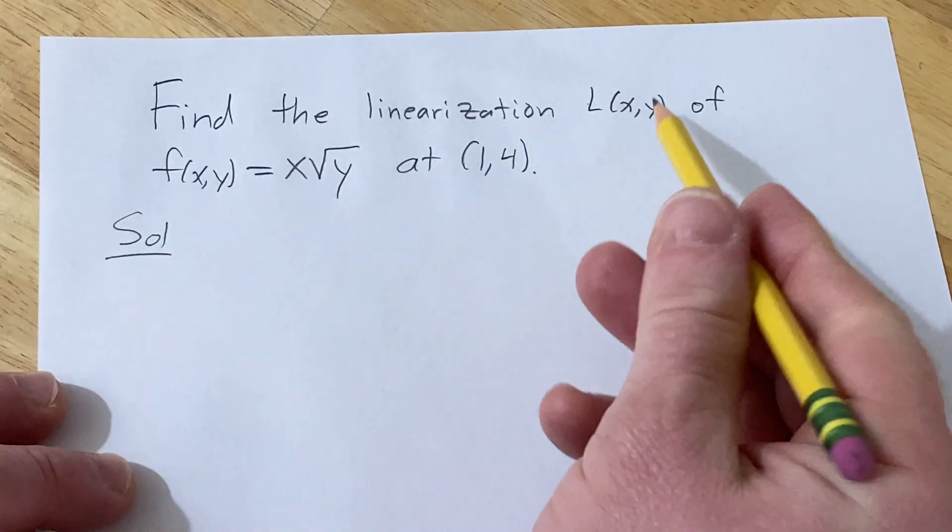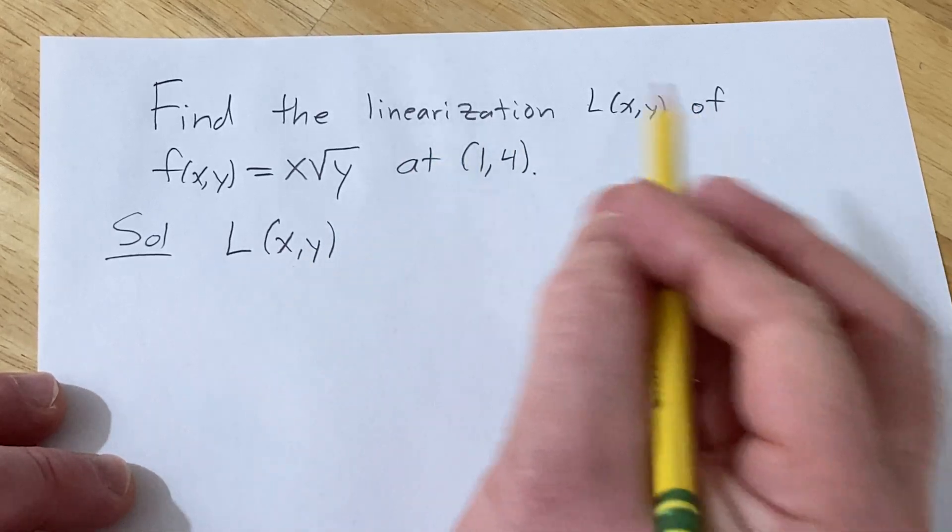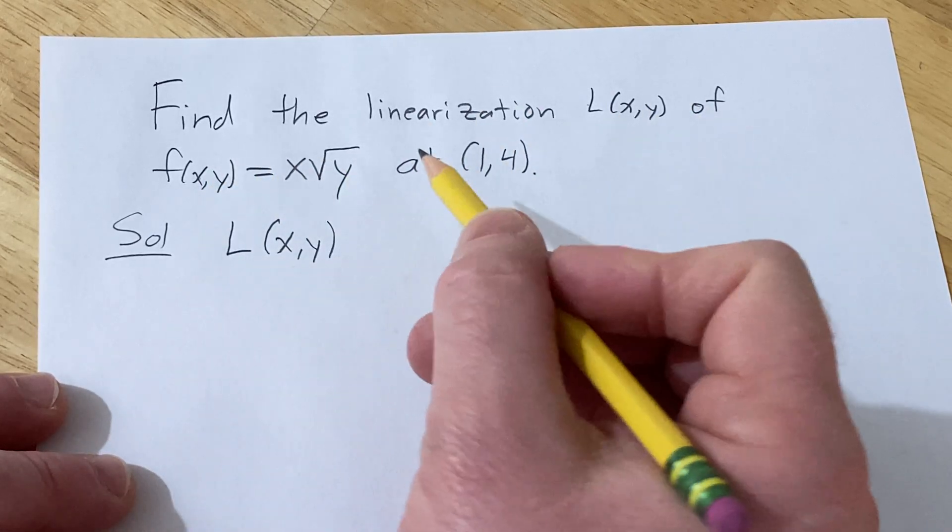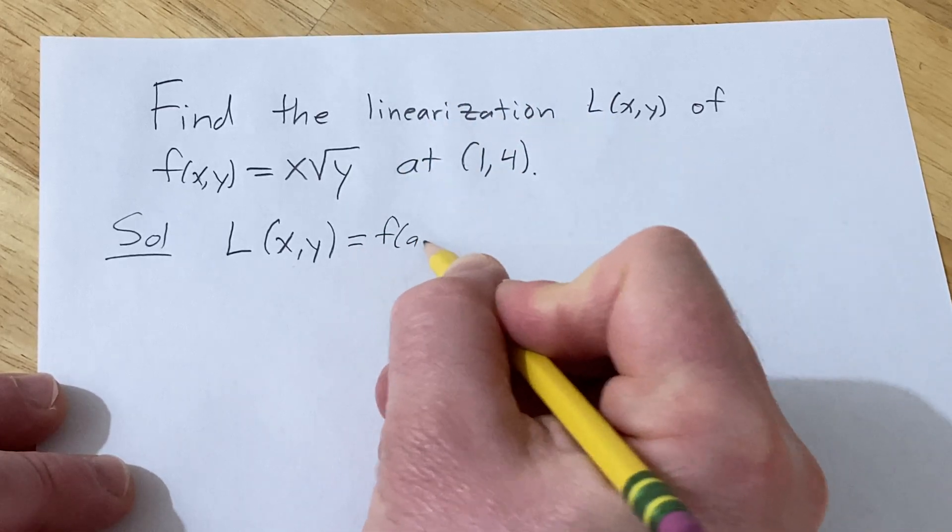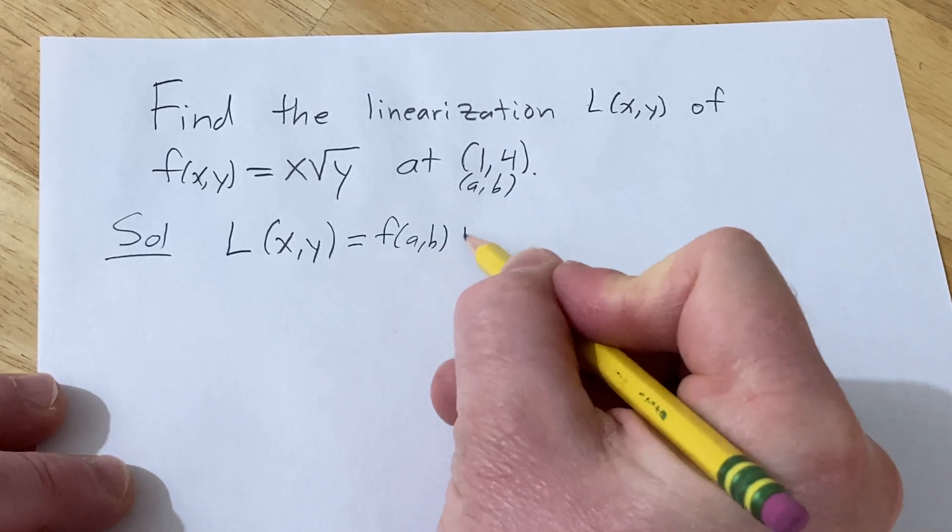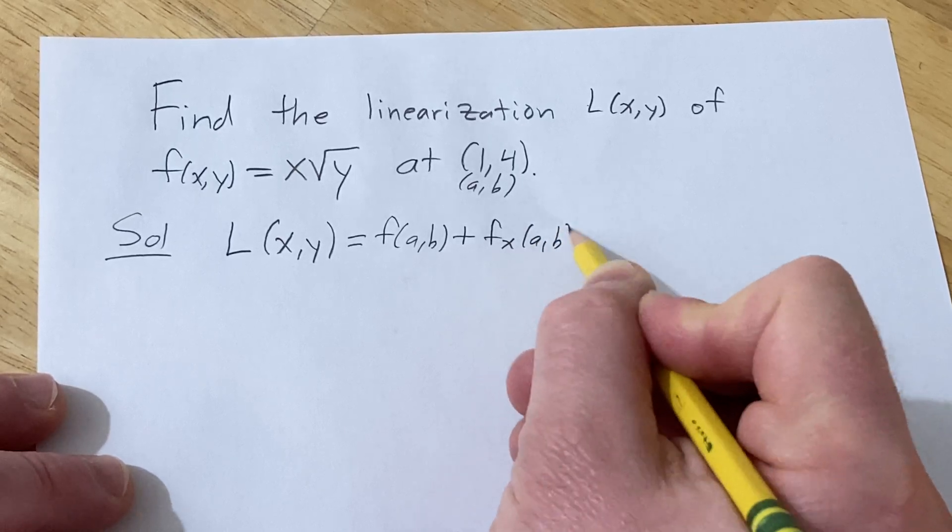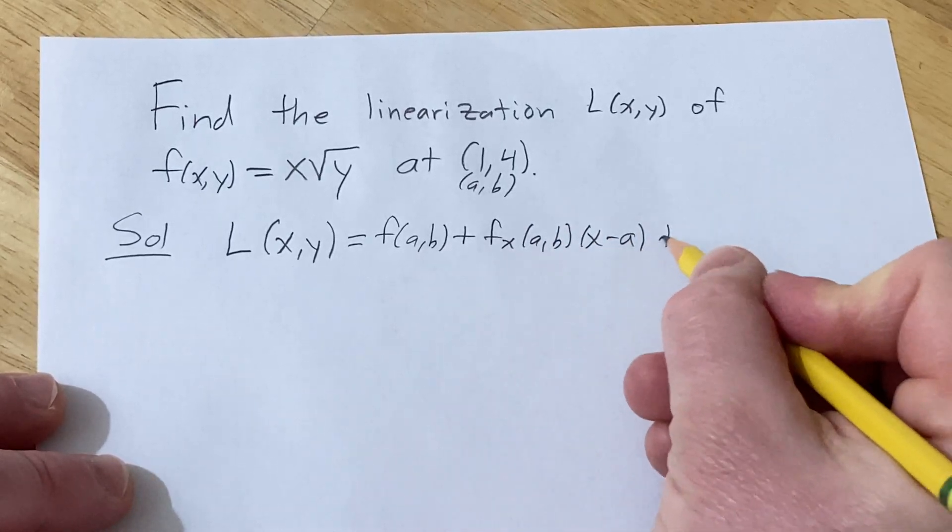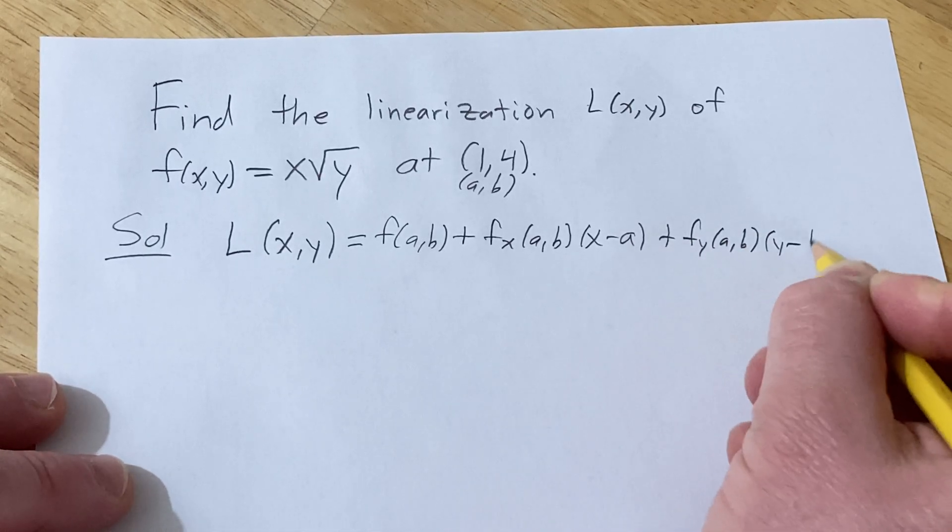So first I'm going to give you the formula. The linearization, or the tangent line approximation, same thing, of this function at a point is going to be f(a,b), where (a,b) is your point—in this case (1,4)—and then plus the partial with respect to x at (a,b) times (x minus a), plus the partial with respect to y at (a,b) times (y minus b).